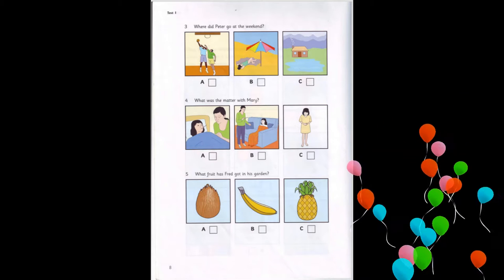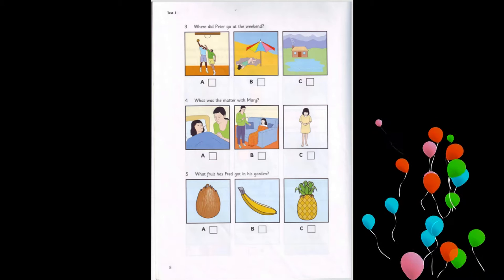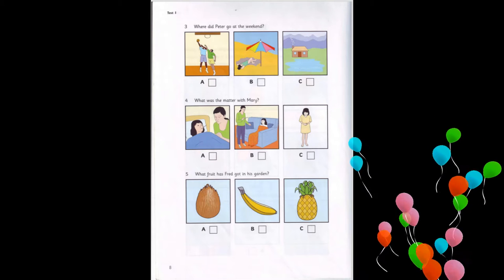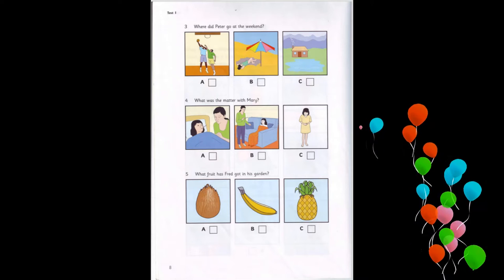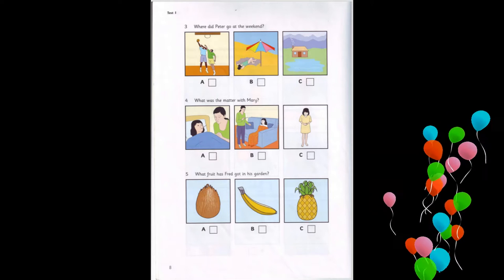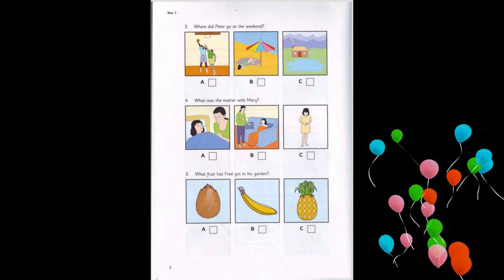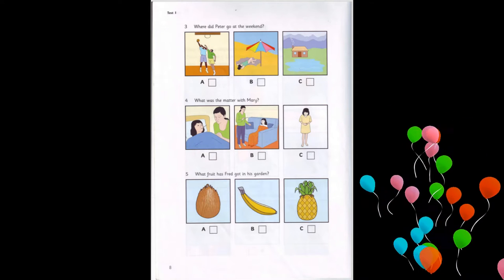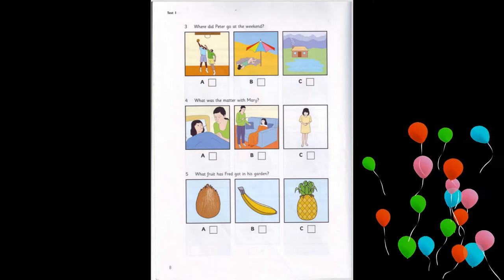One. What does Daisy want for supper? I'm hungry, Mum. What would you like for supper, Daisy? A burger? No. I had a burger at school today. Can I have some pasta? Yes. With some juice and bread? I'm thirsty. But I don't want any bread.